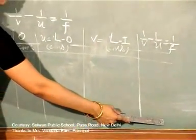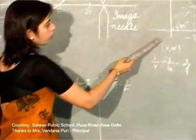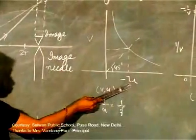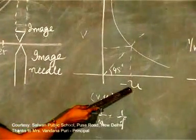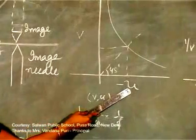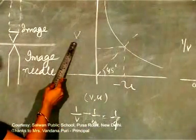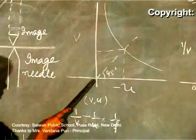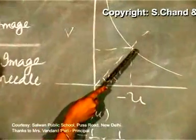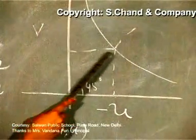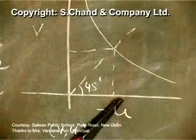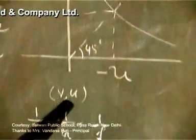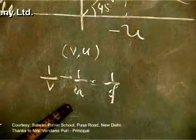If I use a graphical method, I will plot the graph between V and U. U is negative because it is taken in the direction opposite to the incident ray, while V will be positive, giving a curve. I will bisect this curve at 45 degrees and drop perpendiculars from this point onto the V and U axes. The two values of V and U obtained will then be used in the lens formula to find the focal length.